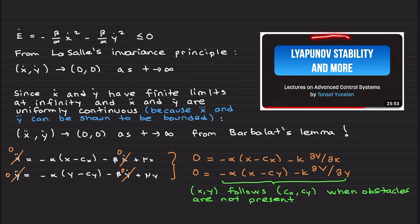LaSalle's invariance principle tells that ẋ and ẏ will go to zero, meaning that motion stops. We are looking at the case where Ė is zero, so basically we see that when Ė is zero, ẋ and ẏ need to be zero.